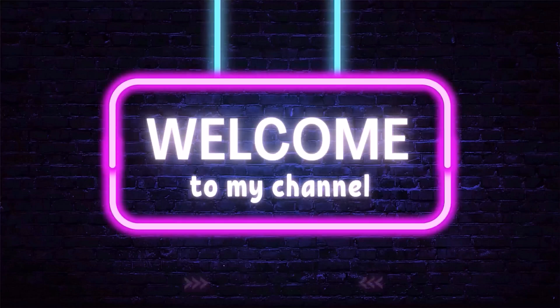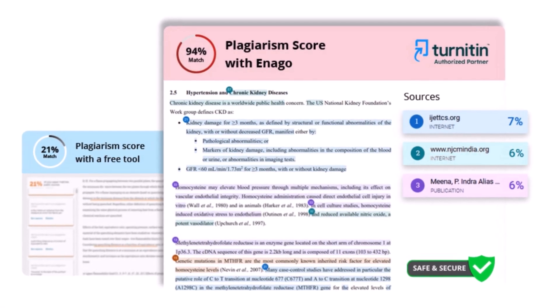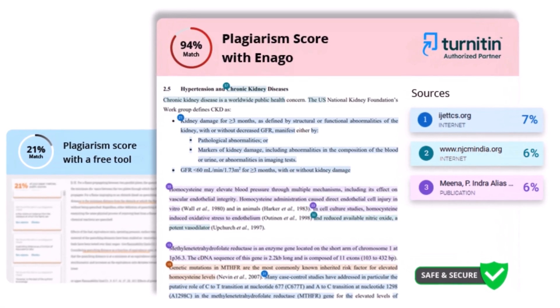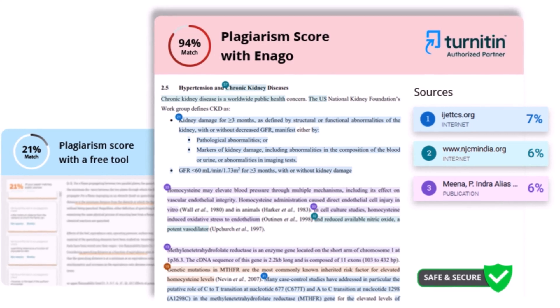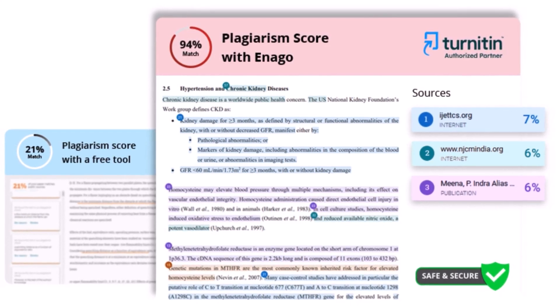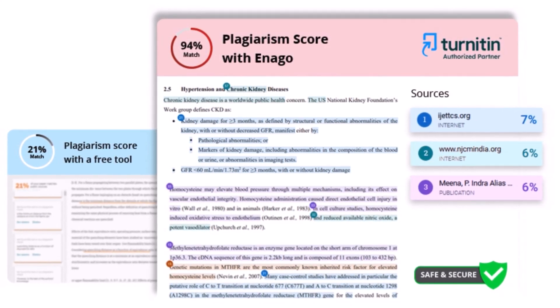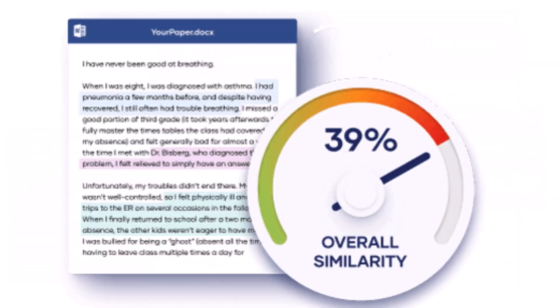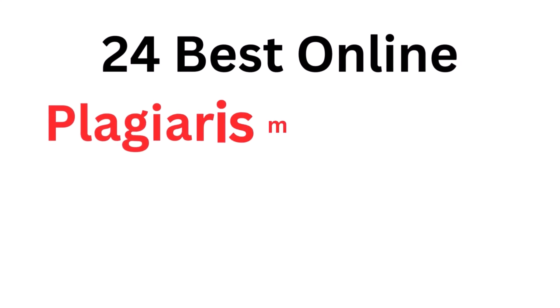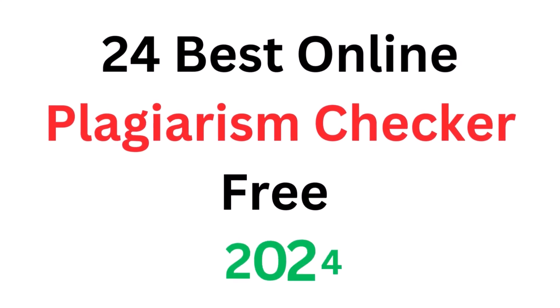Welcome to Research Hub. Plagiarism is a serious offense that can hurt your academic or professional career. To avoid accusations of plagiarism, it's important to use an online plagiarism checker to ensure that your work is original. Many plagiarism checkers are available, so it can be difficult to choose the right one. In this video, we will explain the best free plagiarism checkers of 2024 and help you choose the one that's right for you.